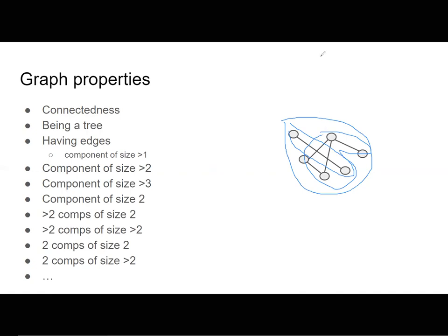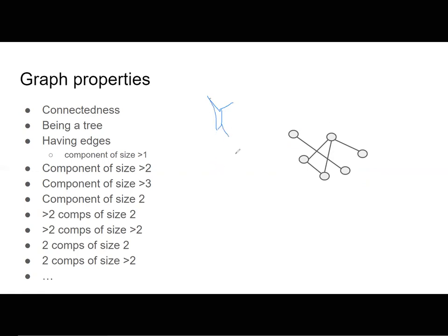A tree is a graph that has no cycles. So this is a tree, but if you add an edge like this, then you have a cycle, so this is not a tree.